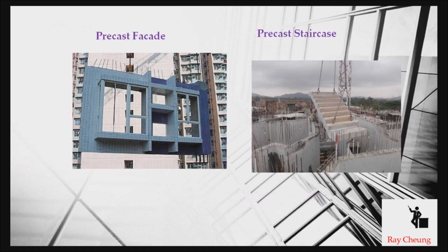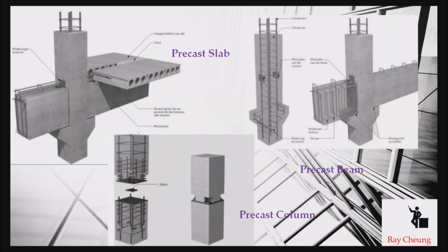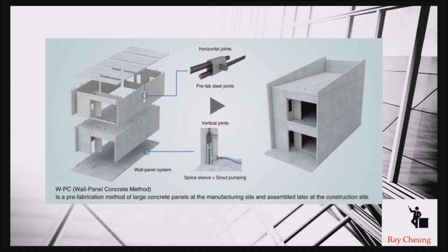You also need to see the so-called precast facade staircase and bathroom. This is the isometric view. Sometimes in Japan you can see they can already use precast panels for their flats.